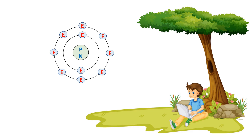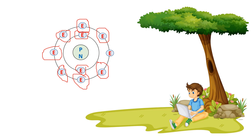The first part contains the electron in the first shell, and the second part of the electron is stable when the shell is complete. In this case, the electron in the second shell determines whether the atom is stable. An atom with a complete outermost shell is considered stable.